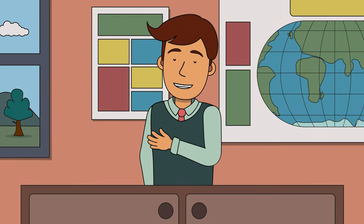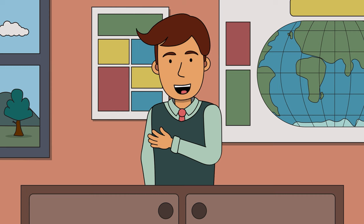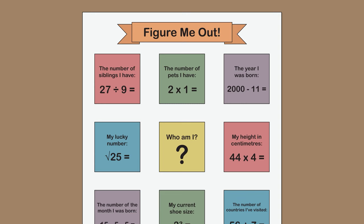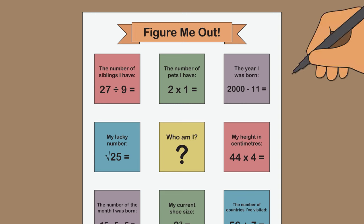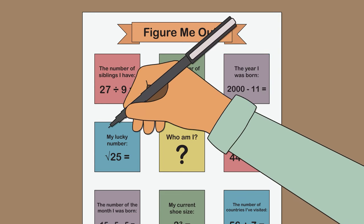Alright final steps. At this stage it's a good idea to have a friend or a teacher check that your number sentences and answers make sense. Once you're happy with your design go over all your pencil lines with a felt tip pen.